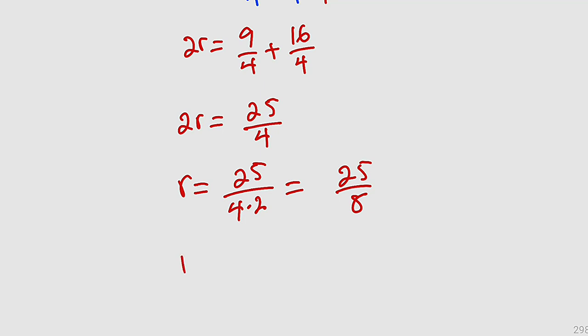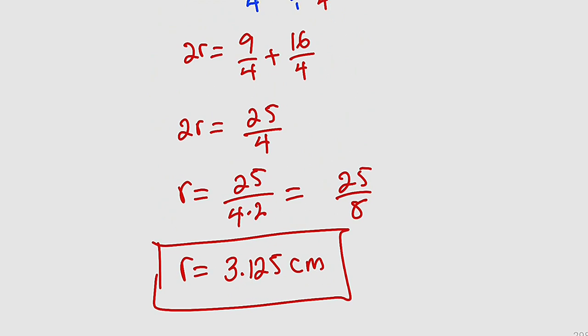So finally, we can say that r is equal to 3.125 cm. This is just the radius of that particular circle.